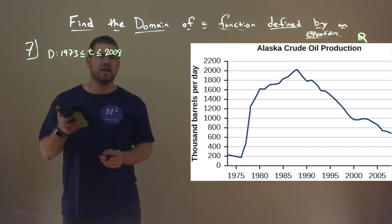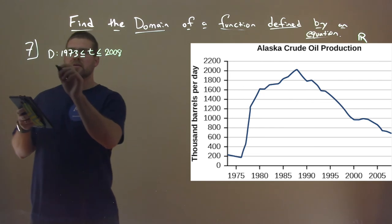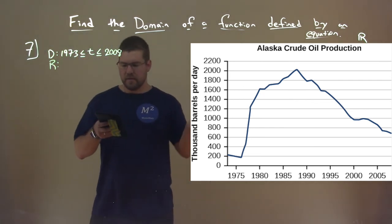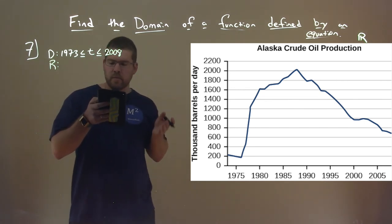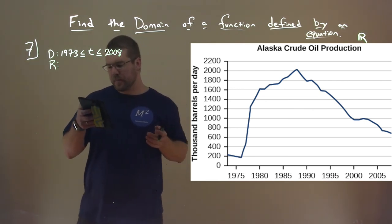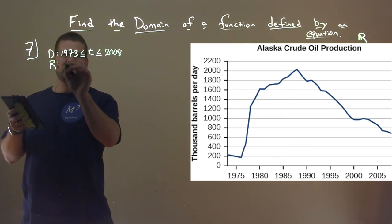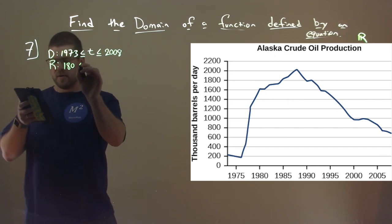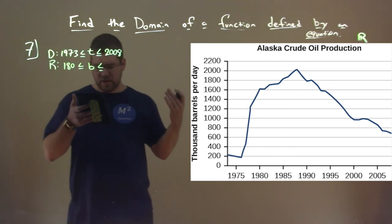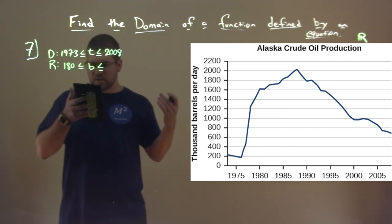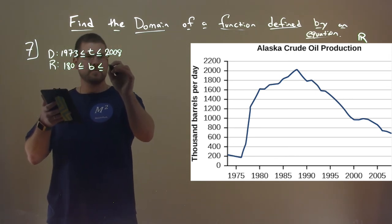Now the range — what's the lowest and highest value? The lowest range of thousands of barrels per day looks just below 200, so about 180. The highest value looks a little over 2000, so I'll say about 2010 barrels per day.